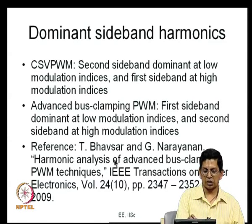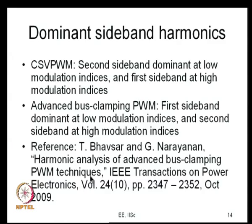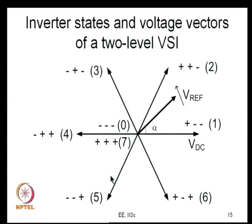Therefore, CSVPWM is better at low modulation indices while advanced bus clamping PWM is better at high modulation indices. A reference for comparison of dominant sideband components of CSVPWM and advanced bus clamping PWM is: T. Bhavsar and G. Narayanan, 'Harmonic Analysis of Advanced Bus Clamping PWM Techniques.' After this review of Fourier harmonic spectra, let us now see how to do the same analysis in the space vector domain.